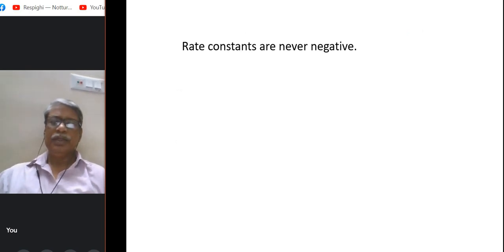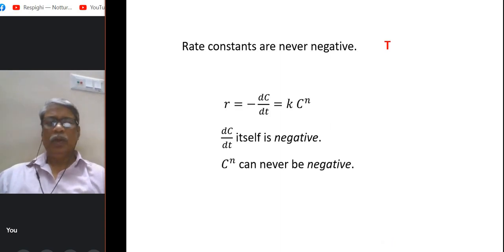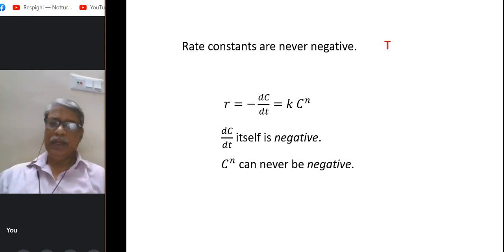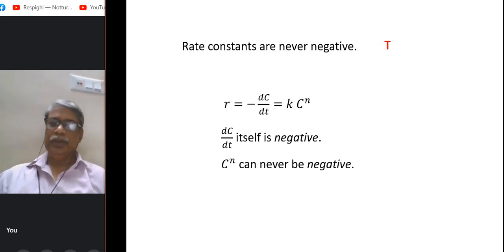Rate constants are never negative — true. Because R = −dc/dt = k·c^n. Now dc/dt itself is negative because concentration decreases with increasing time. The minus sign is there, so the left-hand side is positive, and therefore the right-hand side must also be positive. So k is always positive and can never be negative.